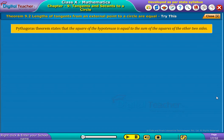Now, let us try to prove the above theorem using Pythagoras theorem. Pythagoras theorem states that the square of the hypotenuse is equal to the sum of the squares of the other two sides.